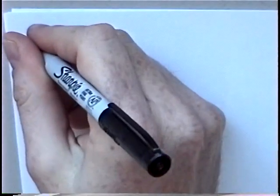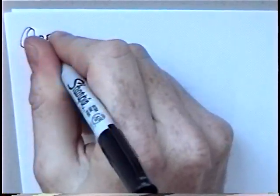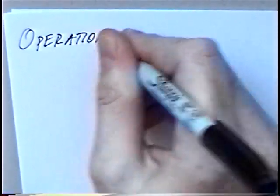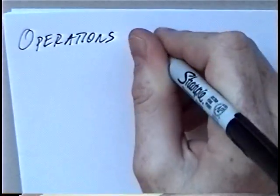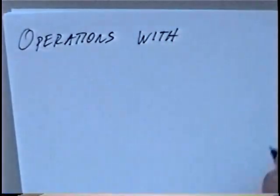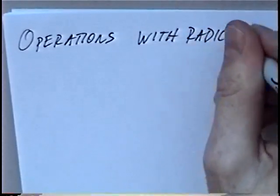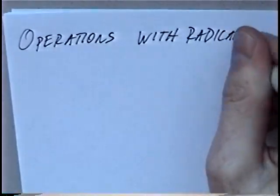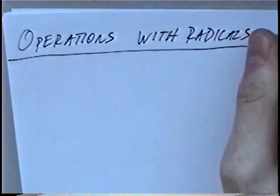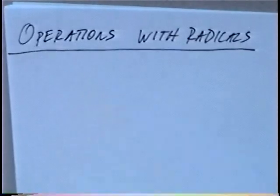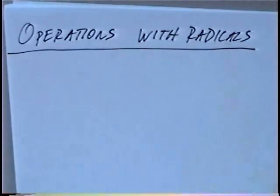The last section today is Operations with Radicals. In this section we'll look at basic operations — addition, subtraction, and multiplication with radicals or square roots.